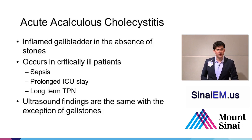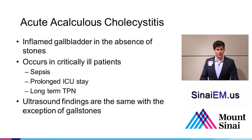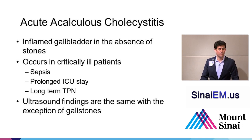Sometimes you can see acute acalculous cholecystitis. It's a very common ICU phenomenon — an inflamed gallbladder in the absence of stones. Septic patients, long ICU stay, and prolonged TPN all predispose patients to this condition. The ultrasound findings are otherwise similar: if the patient is alert enough to describe a sonographic Murphy sign, it will typically be present; you can see common bile duct dilatation and thickening of the gallbladder wall — you just wouldn't see gallstones.